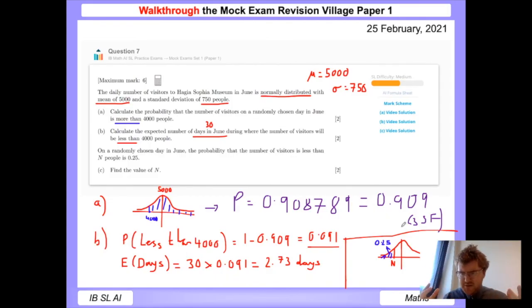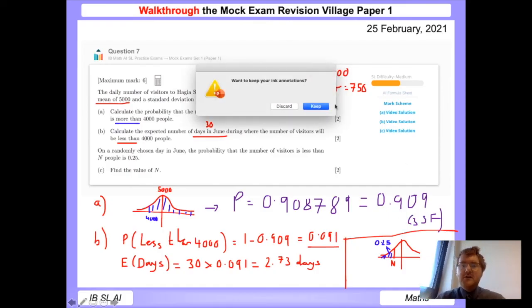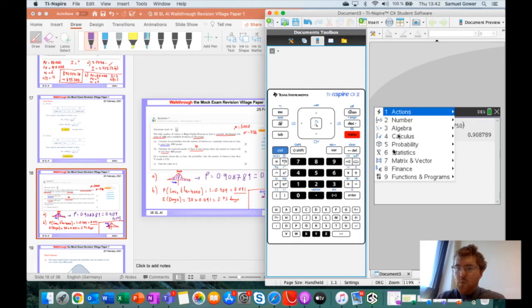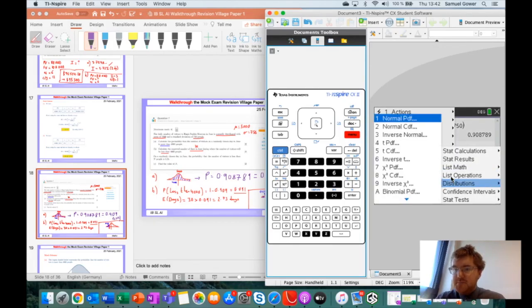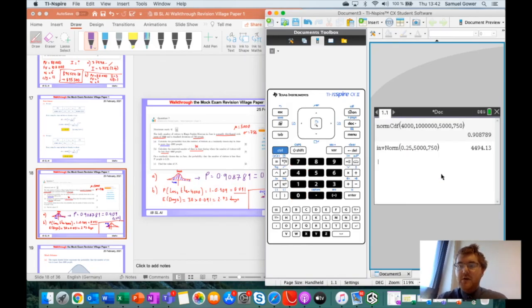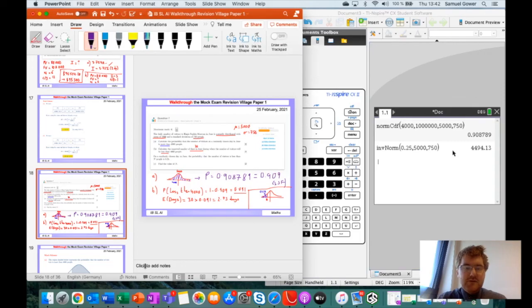As soon as you think working backwards, you need to think the word inverse. We go to menu, statistics, probability distributions, inverse normal. Then we type in the area under the graph, which is 0.25, our mean, and our standard deviation. We press ok and we generate our answer, which is 4494.13.